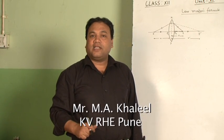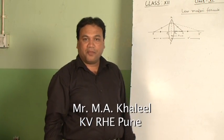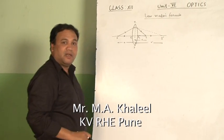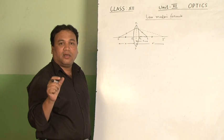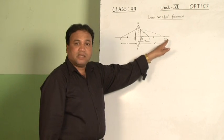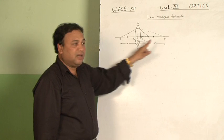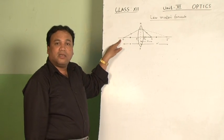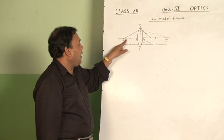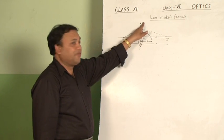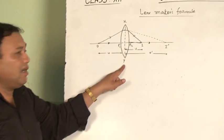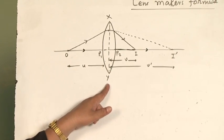Now, let us derive the lens maker's formula. For this purpose, I have used one convex lens here which is thick at the middle and thin at the edges. One principal axis has been taken. On the principal axis, a point-size object has been placed. Consider the first surface now — left surface XP1Y. This is a spherical refracting surface.